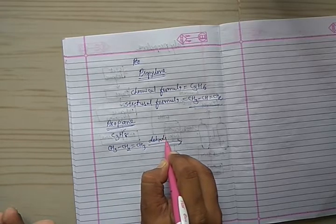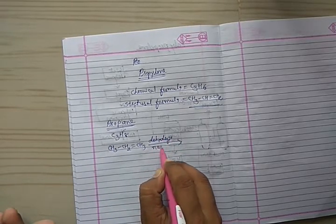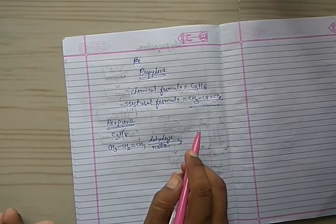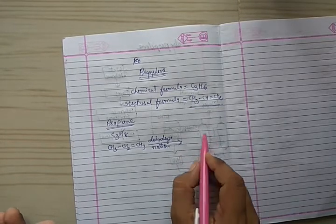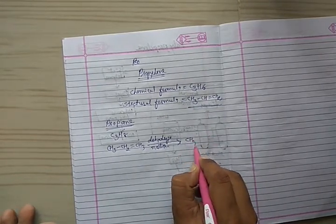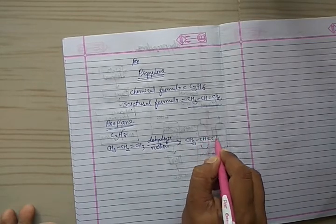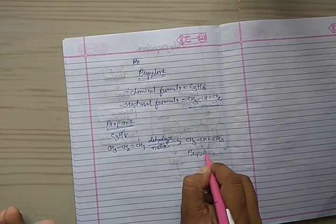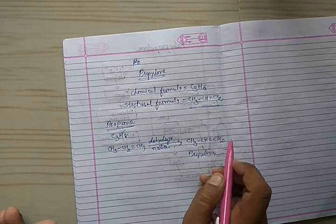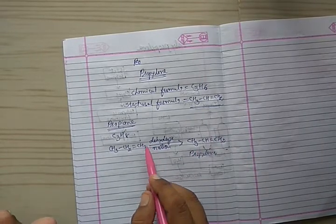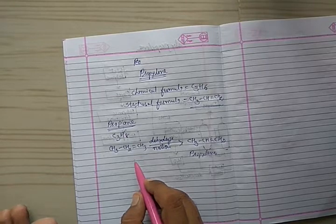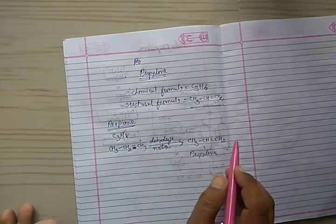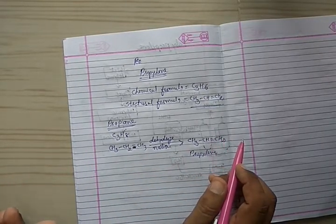By dehydrogenation of propane, we get CH3 single bond CH double bond CH2, which is known as propylene. It means the removal of one hydrogen molecule (H2) from propane gives us propylene.